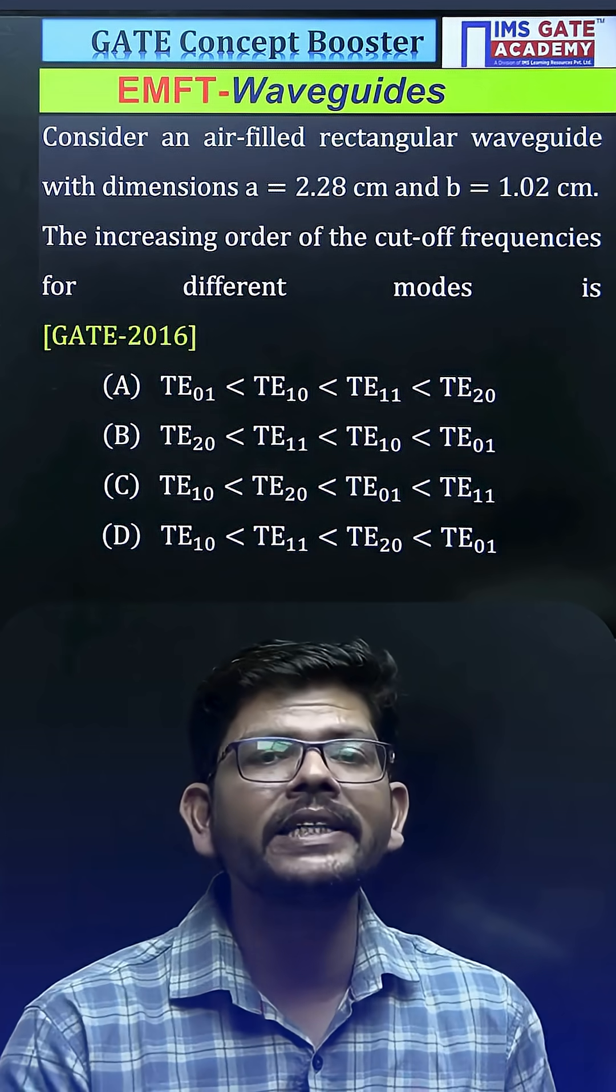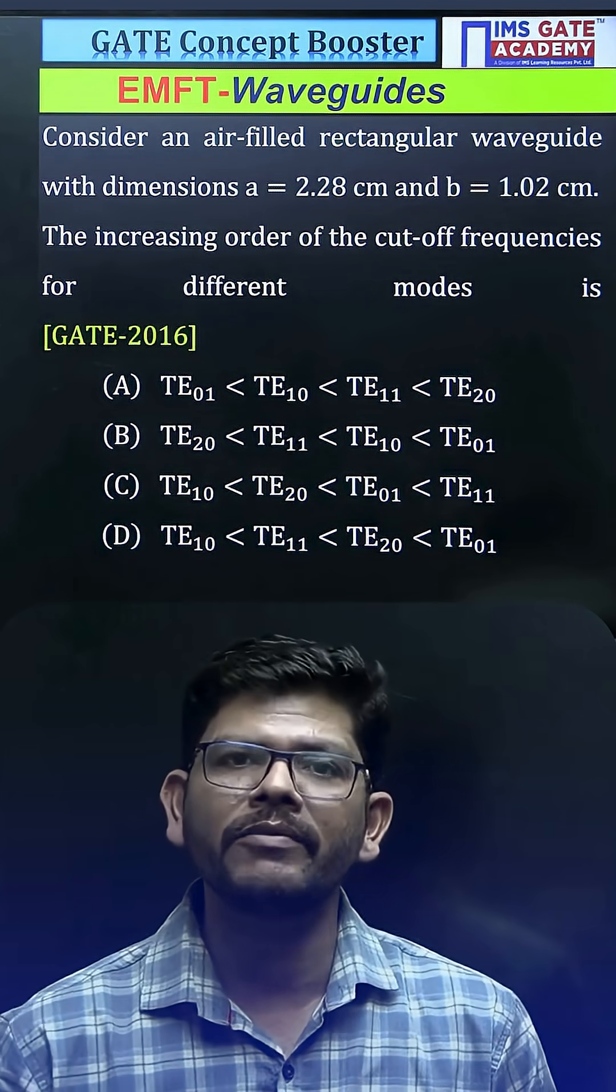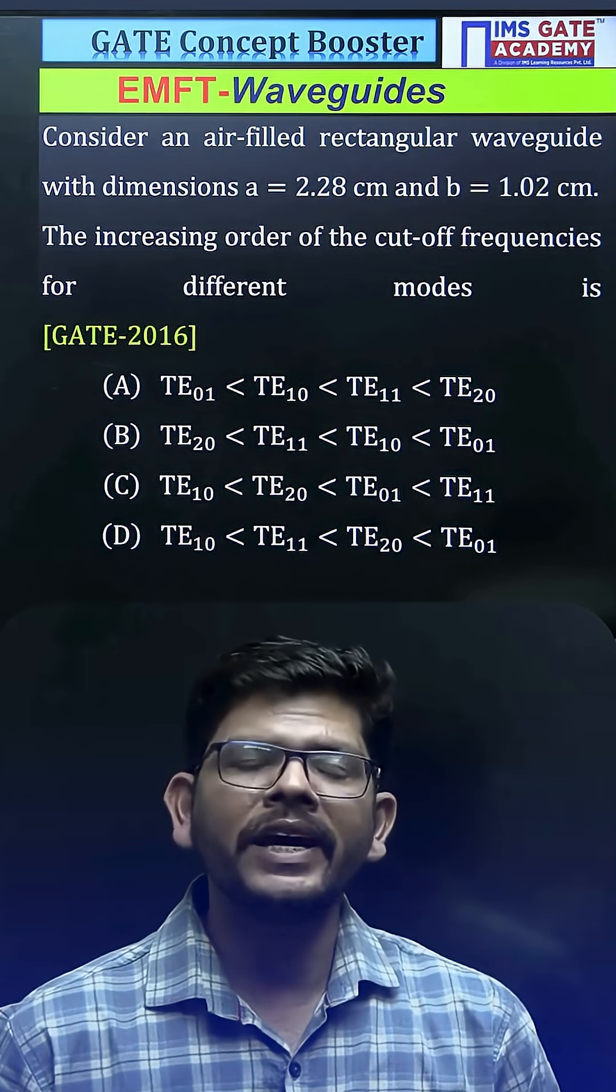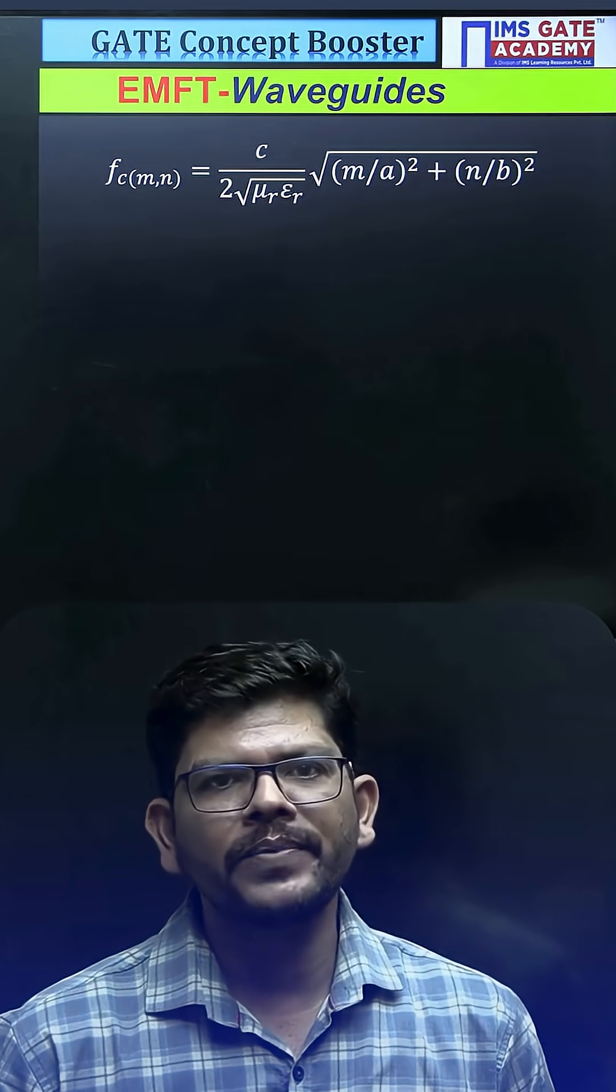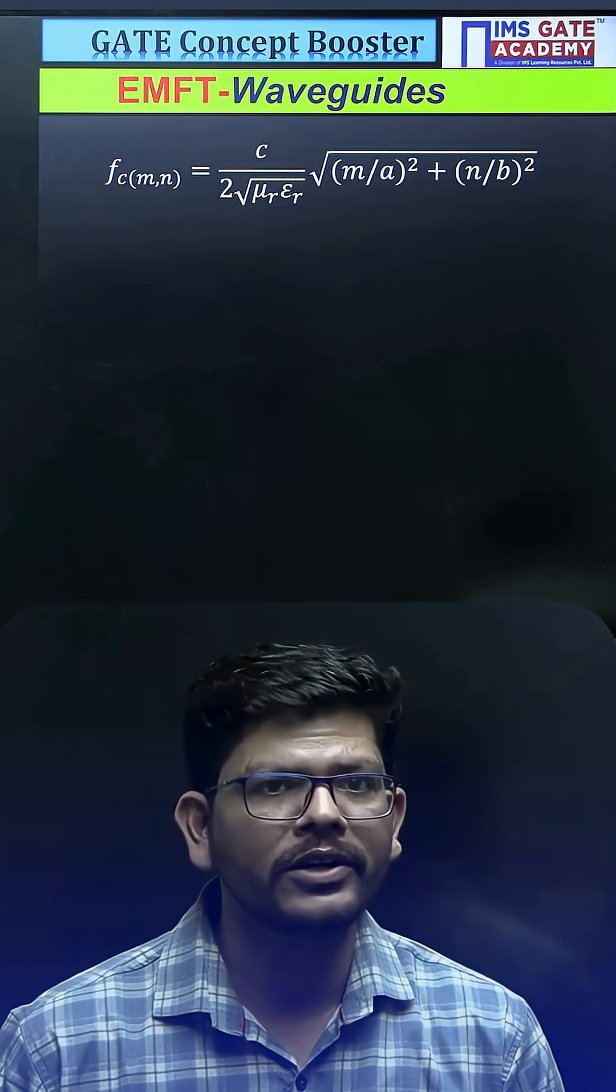Then you have to comment that what would be the increasing order of the cutoff frequency for the different modes, and the different modes given are TE₁₀, TE₀₁, TE₂₀, and TE₁₁. How to solve questions like this? Well, you just have to remember one formula, and that is the formula for cutoff frequency.